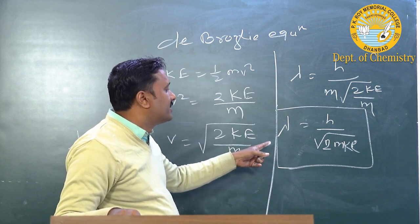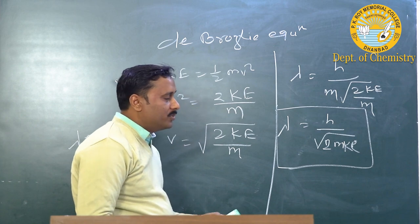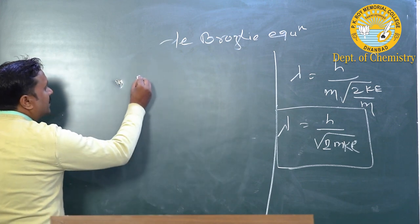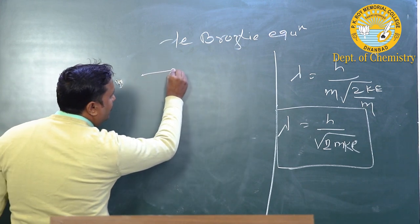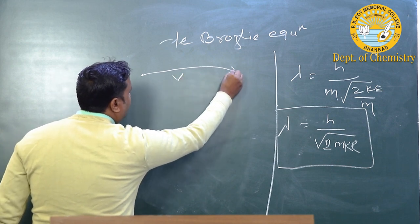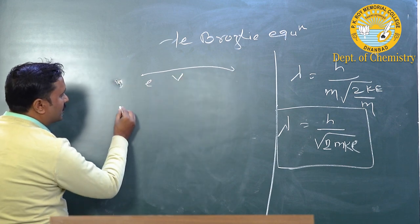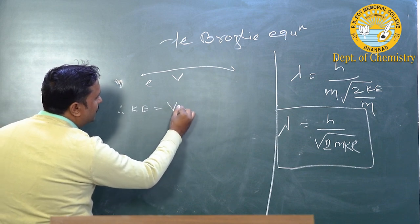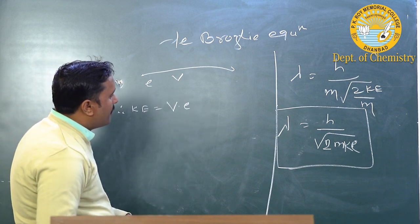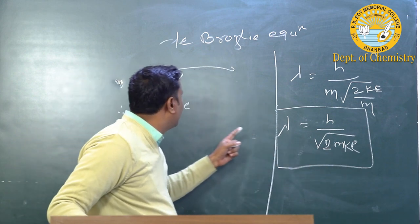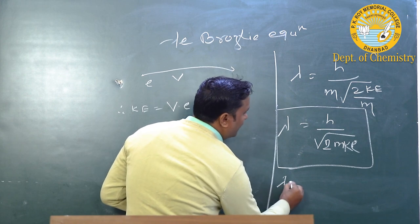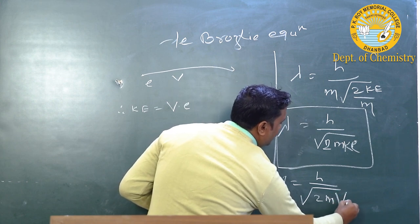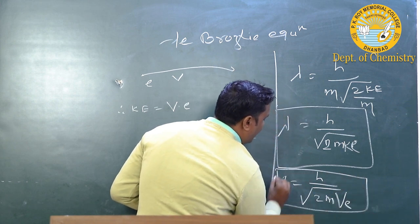We can further extend the de Broglie equation. Suppose an electron with charge e is projected through a potential V. Then its kinetic energy KE equals eV. Replacing KE with eV, we again get λ = h / √(2meV). This is another form of the de Broglie equation.